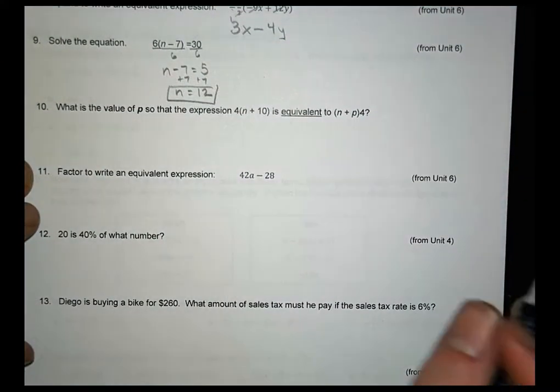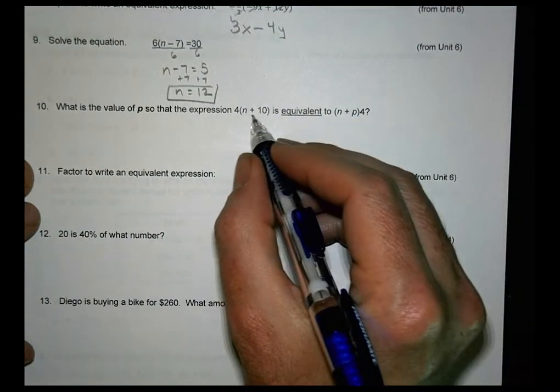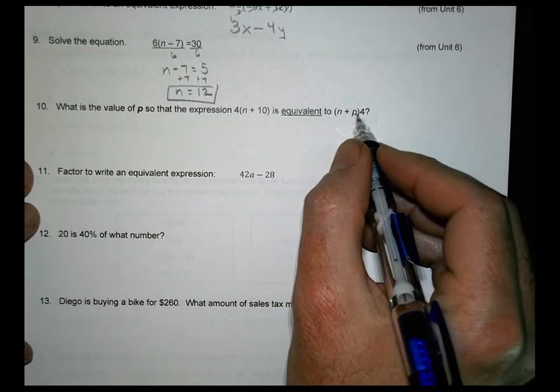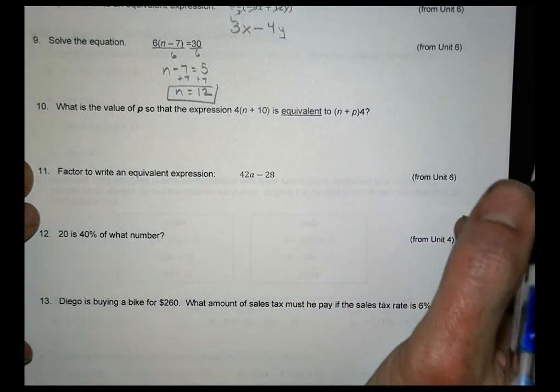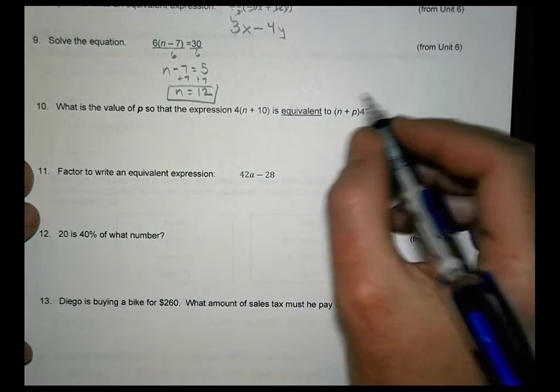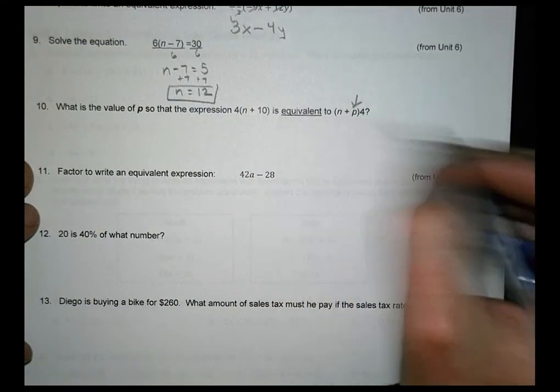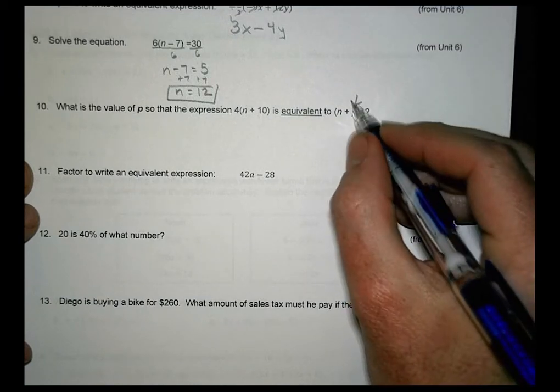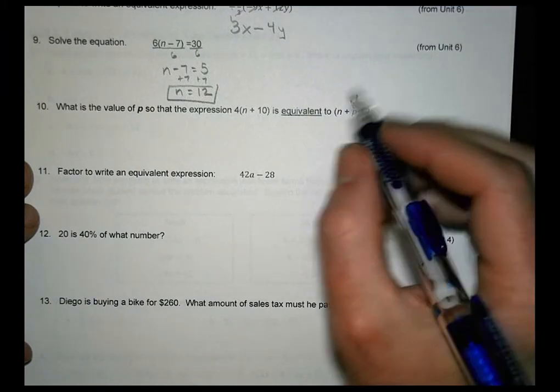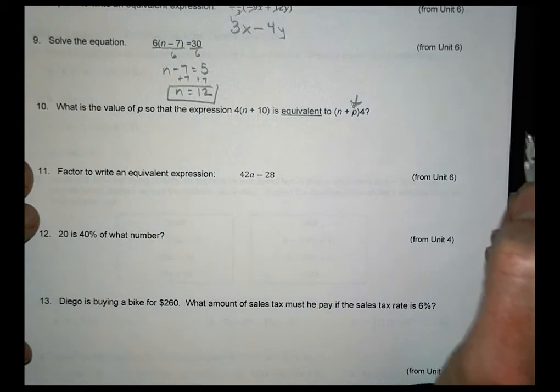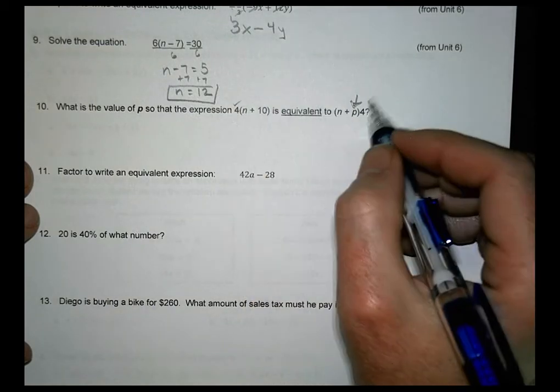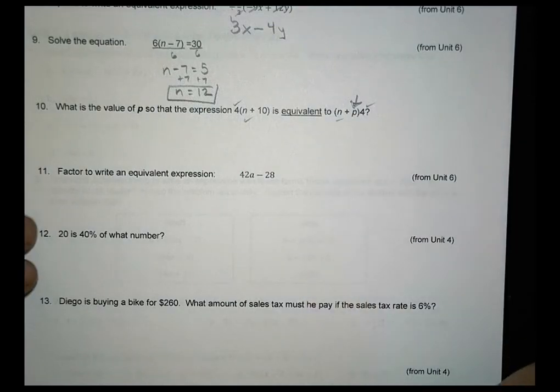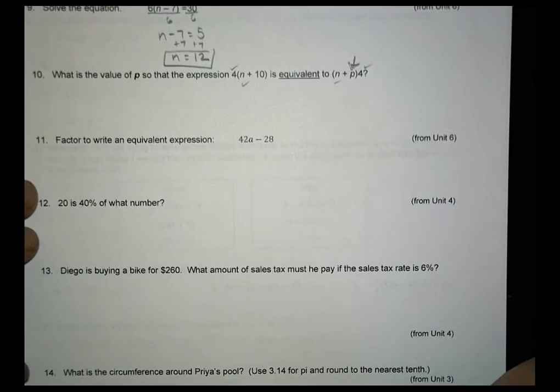10. What is the value of p? So the expression 4 times n plus 10 is equivalent to n plus p equals 4. All right. So we want to know a value of p that we can put right there. So this is going to be equivalent. Okay. So let's look at those and see what do you think you need to put right there so that these would be equivalent. Okay. You have a 4 on the outside of each of those. You have an n on the inside. So what needs to go there? I'll let you do that one there for number 10.